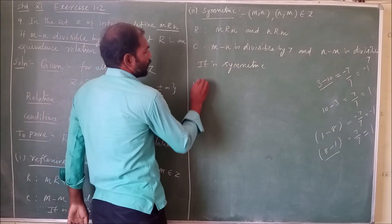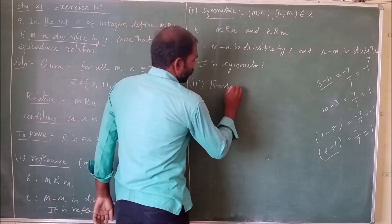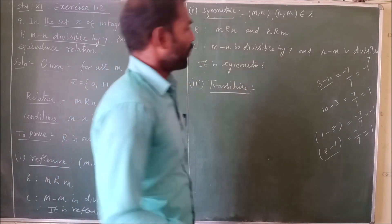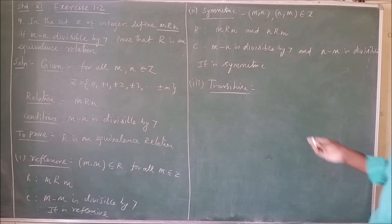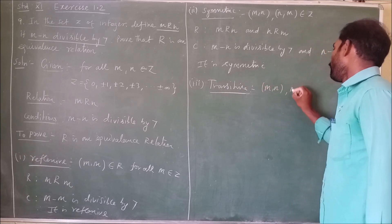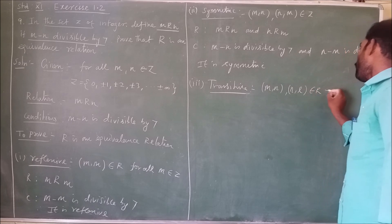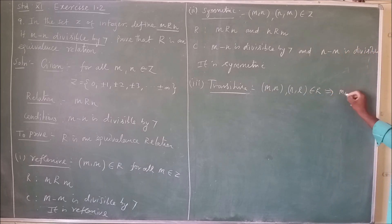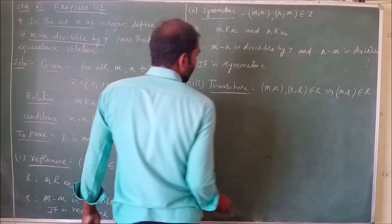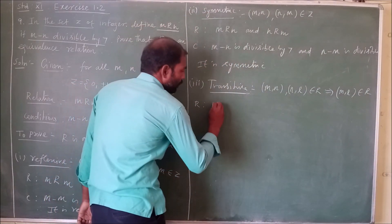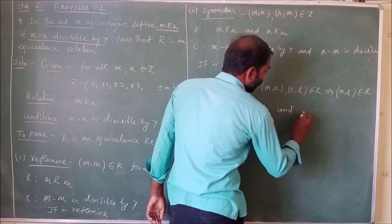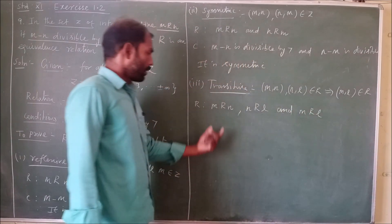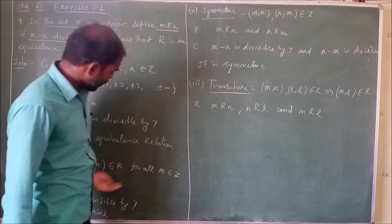Third one is transitive. The basic definition for transitive: take any three numbers m, n, and l. If (m, n) and (n, l) both belong to R, this implies (m, l) also belongs to R. The relation is: m related to n, n related to l, and m related to l.